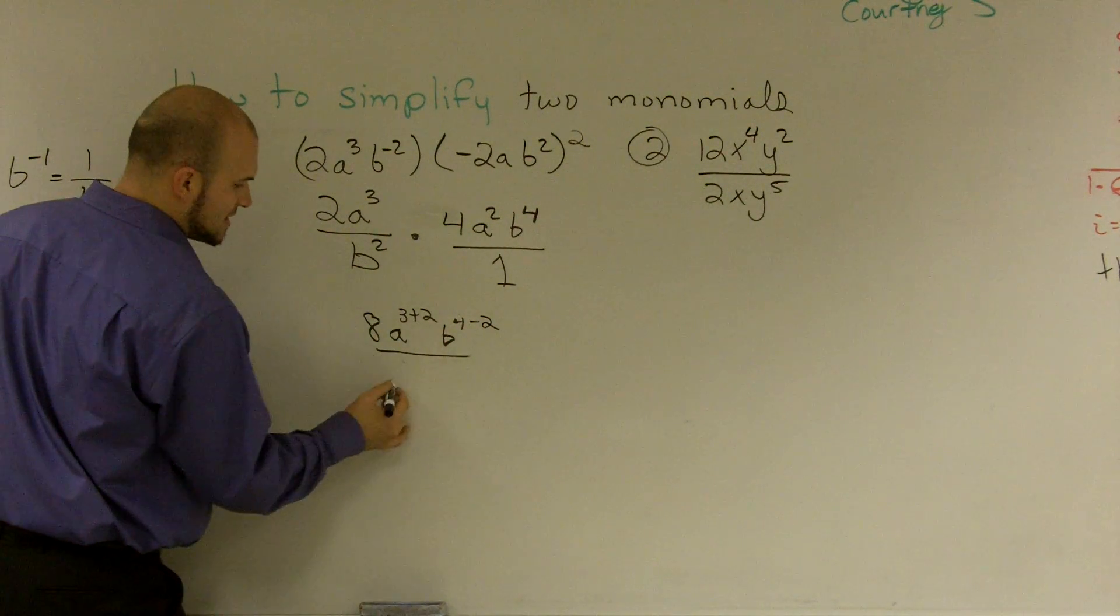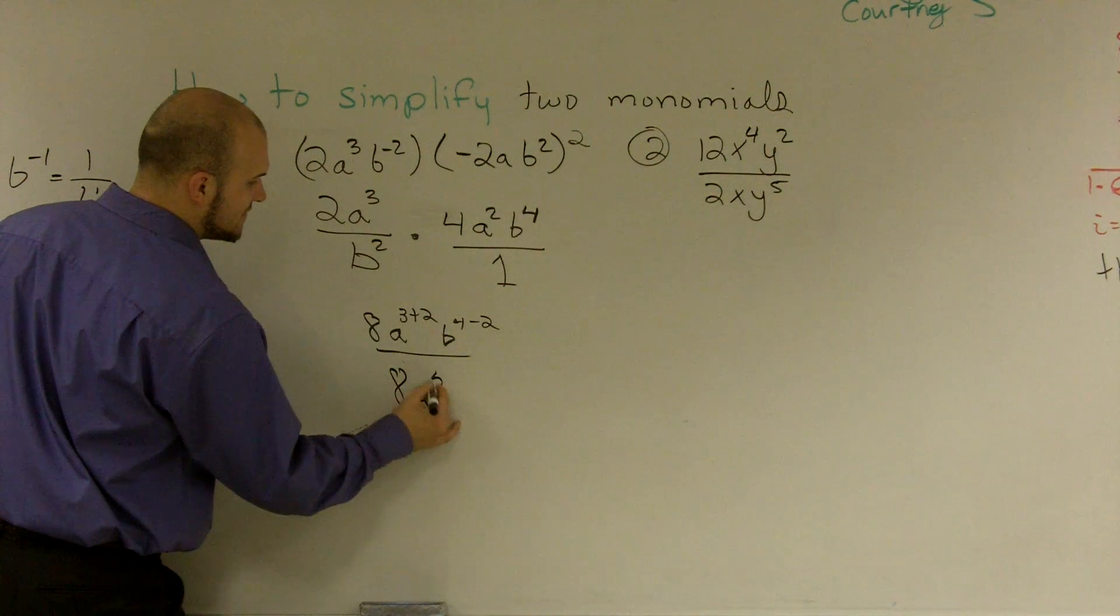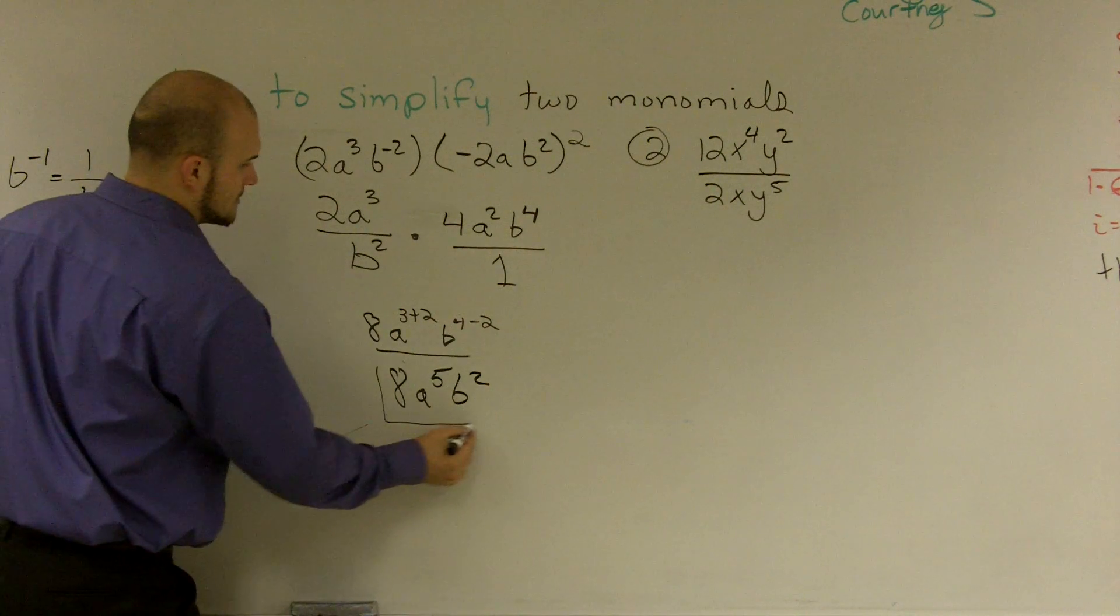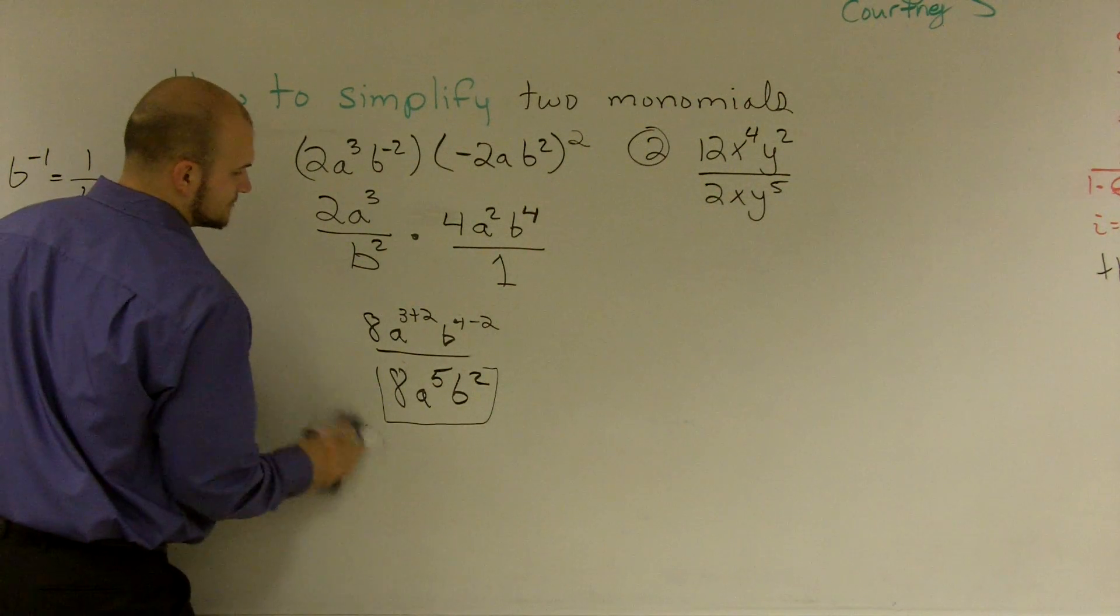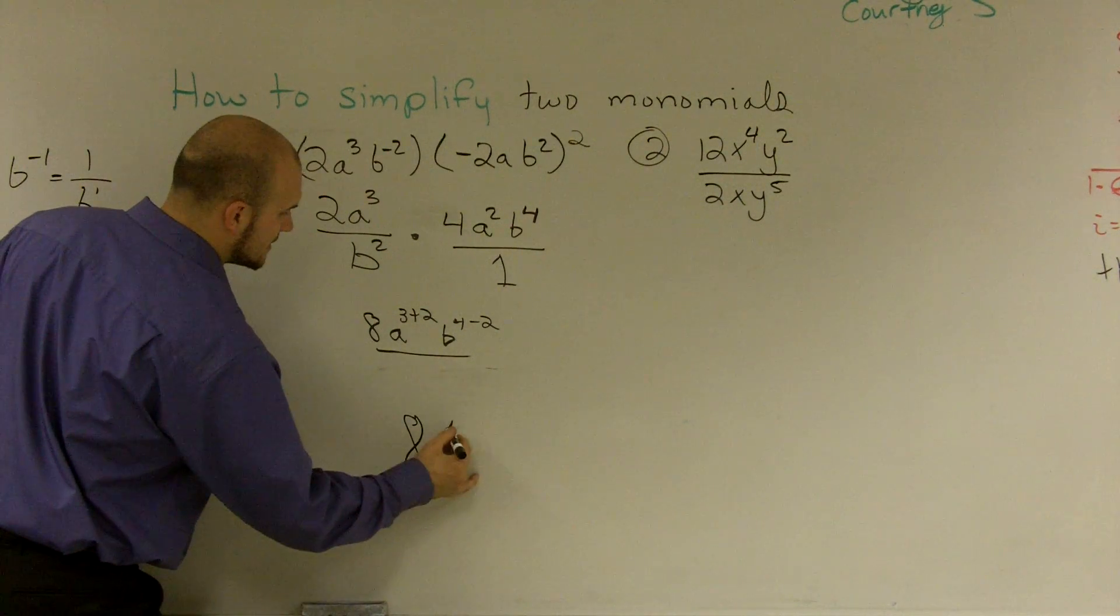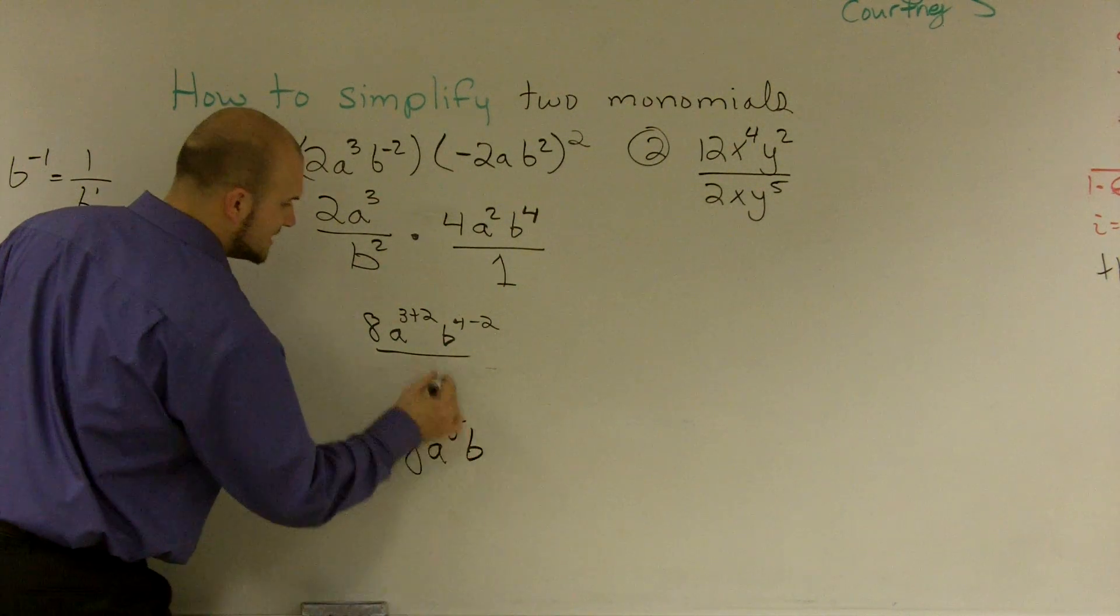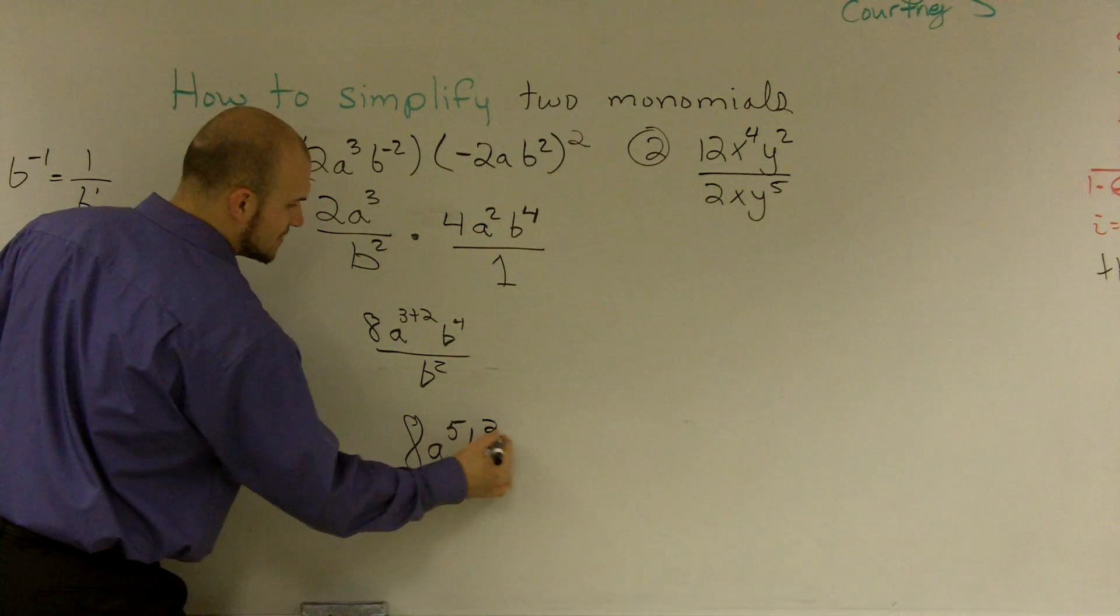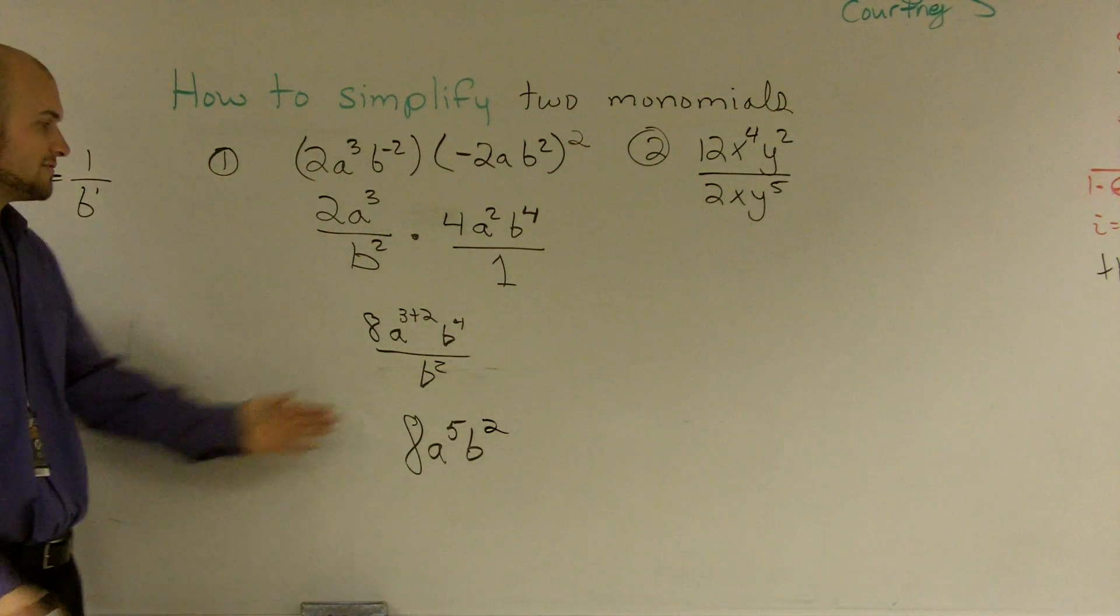So essentially, when I add these up, I get 8a to the 5th b squared. Here, a to the 5th b, 4 minus 2 is going to become 2. So that's your simplified version.